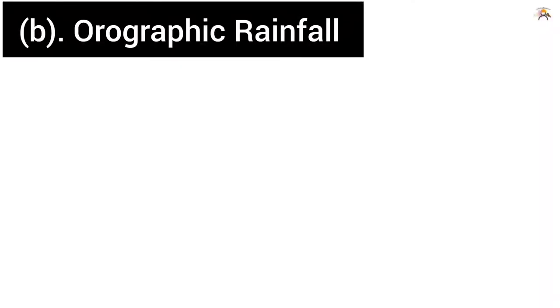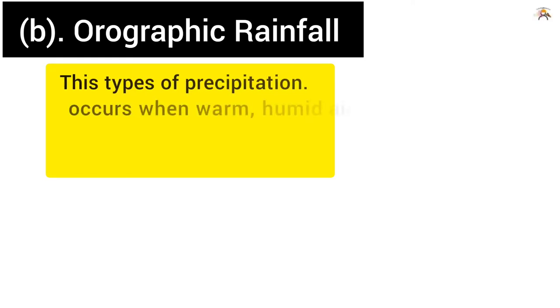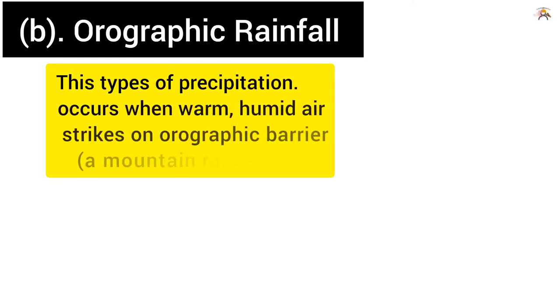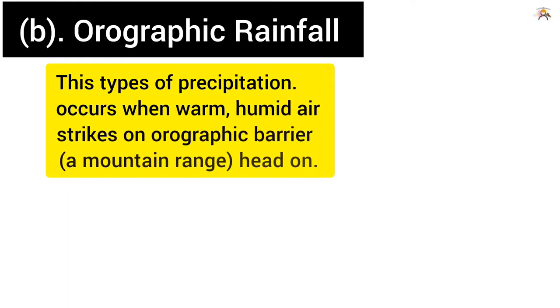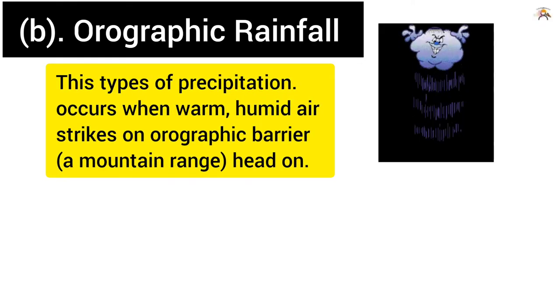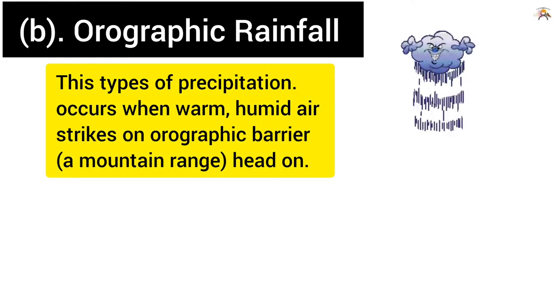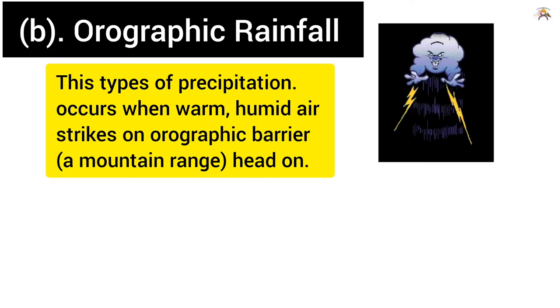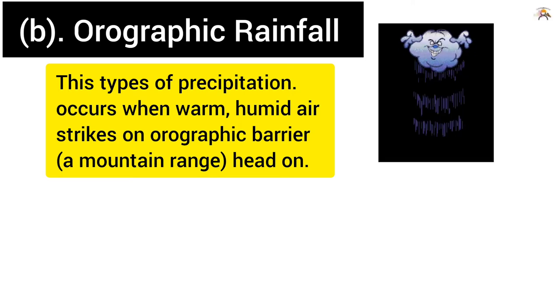Orographic rainfall. This type of precipitation occurs when warm, humid air strikes an orographic barrier — a mountain range — head-on.